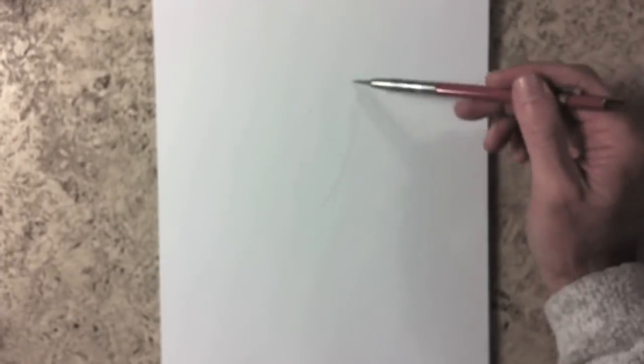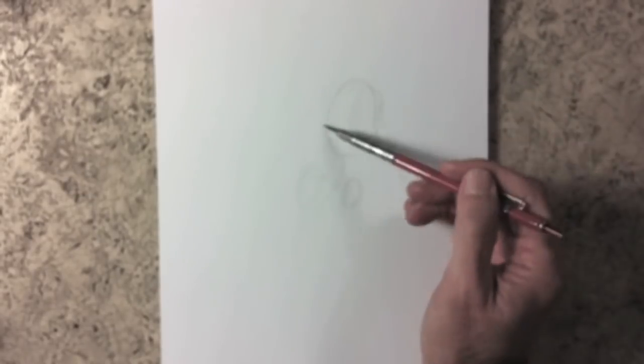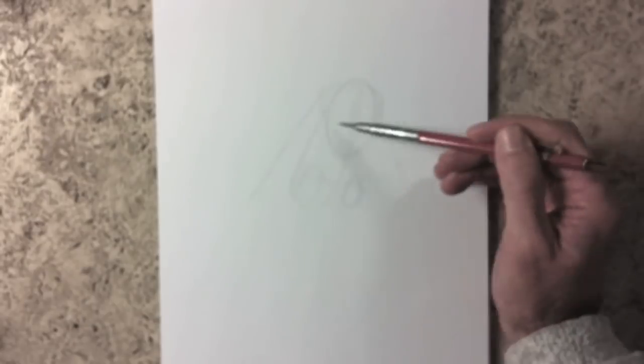Now let's do a sitting girl from the back. We do the mood line with the ovals and basic structure. Oops, sorry, it's auto-focus. Okay!